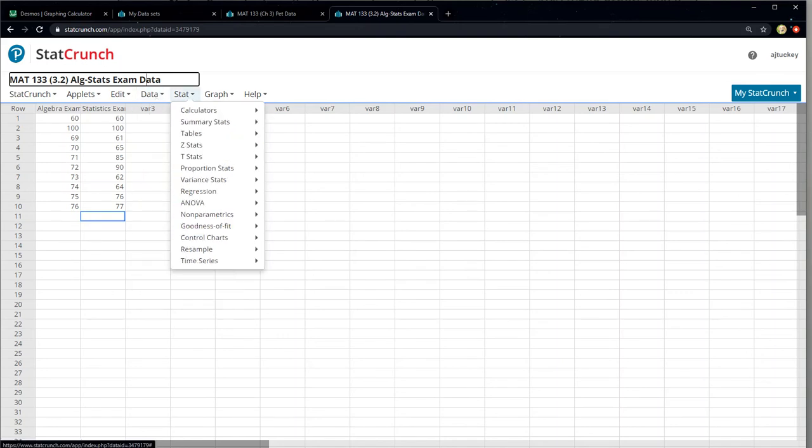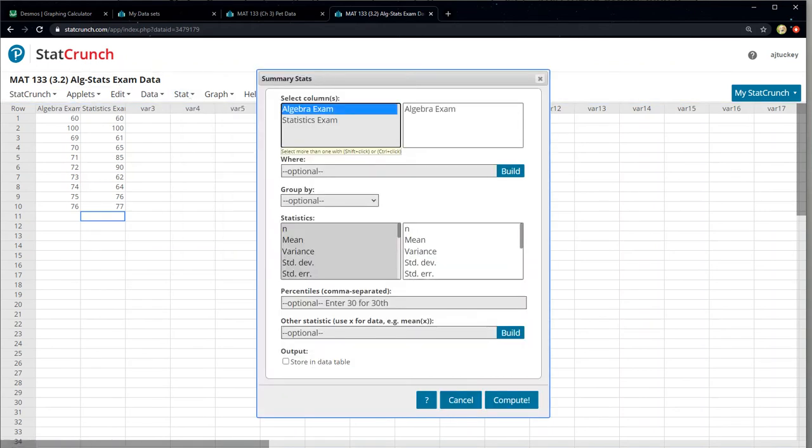So I want to go to stat, I want to go to summary statistics of columns. And I can select both the algebra and the stats column. So to do that, I held down the control key. So I clicked algebra and I clicked stats. And then I want to find the mean. I'm going to scroll through and find the range. There it is. I'm holding down my control button and clicking range. So it'll find the mean and the range for me.